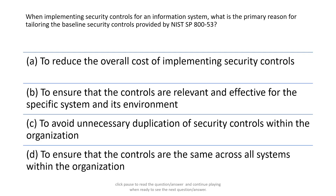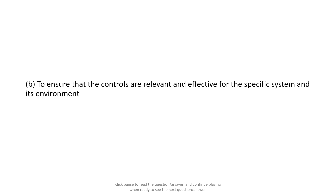Here's the next question. Click pause to read the question and continue playing when you're ready to see the answer. The answer is B — to ensure that the controls are relevant and effective for the specific system and its environment. Tailoring the baseline security controls provided by NIST SP 800-53 is essential to ensure that the controls are relevant and effective for the specific system and its environment. This process takes into account the unique risks, threats, and vulnerabilities associated with the system, as well as the organization's specific risk tolerance and requirements.